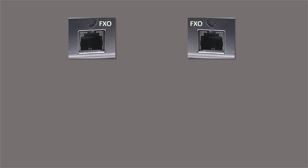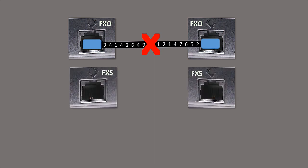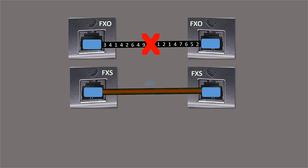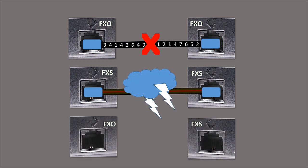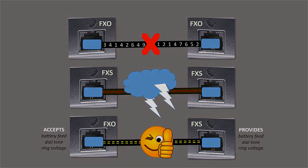First, if we try plugging an FXO port into another FXO port, we'll get nothing. As you just learned, these ports provide DTMF — if you connect them to each other, neither has the ability to listen to DTMF. Plugging a device with an FXS port into another FXS port can be very harmful to the equipment since both provide power. Plugging an FXO port into an FXS port allows one to provide what the other needs, and vice versa.